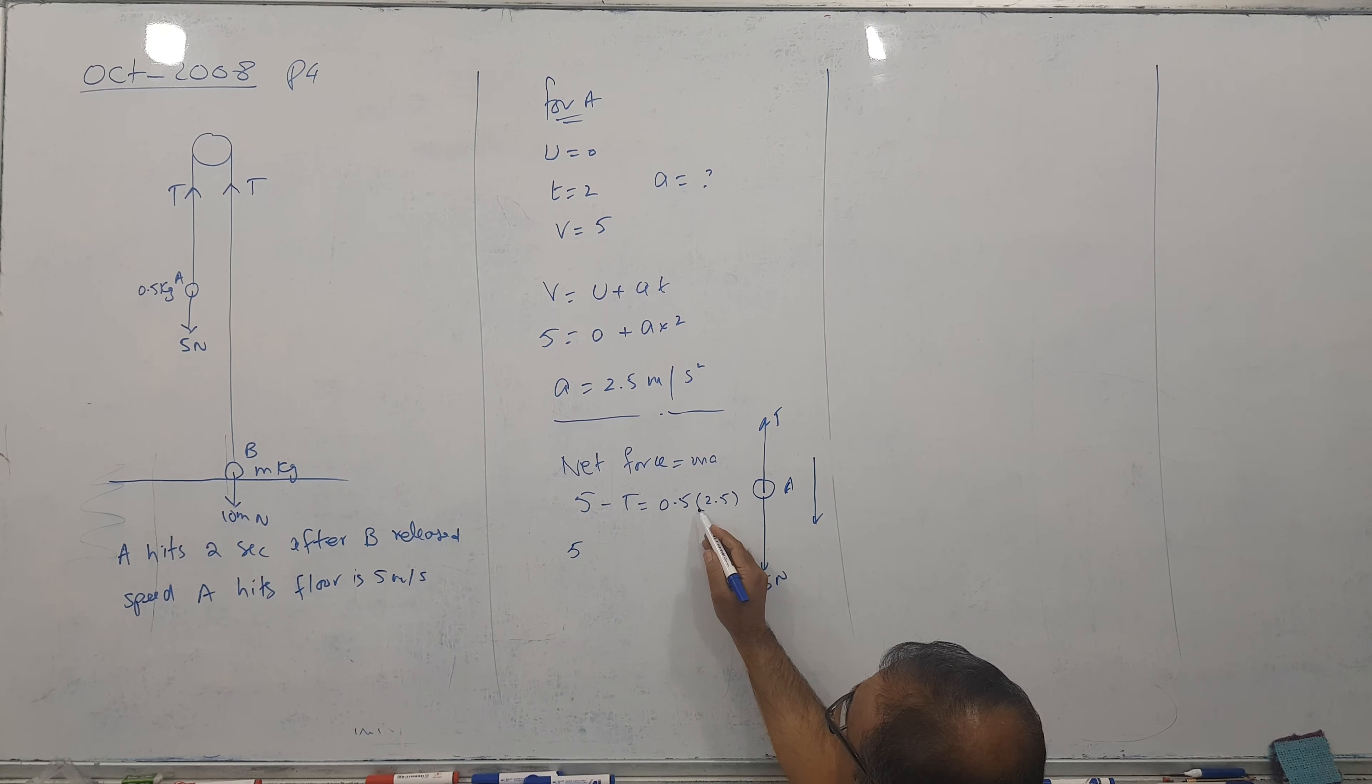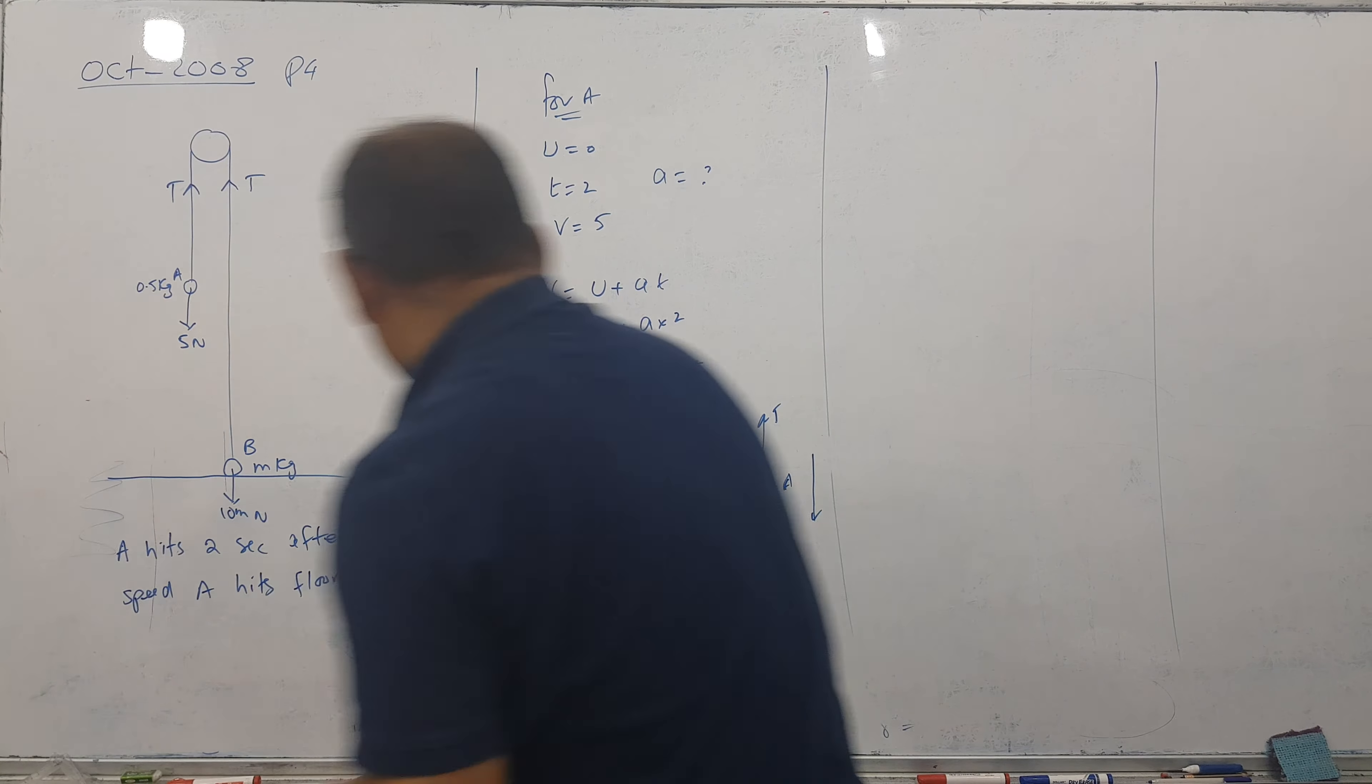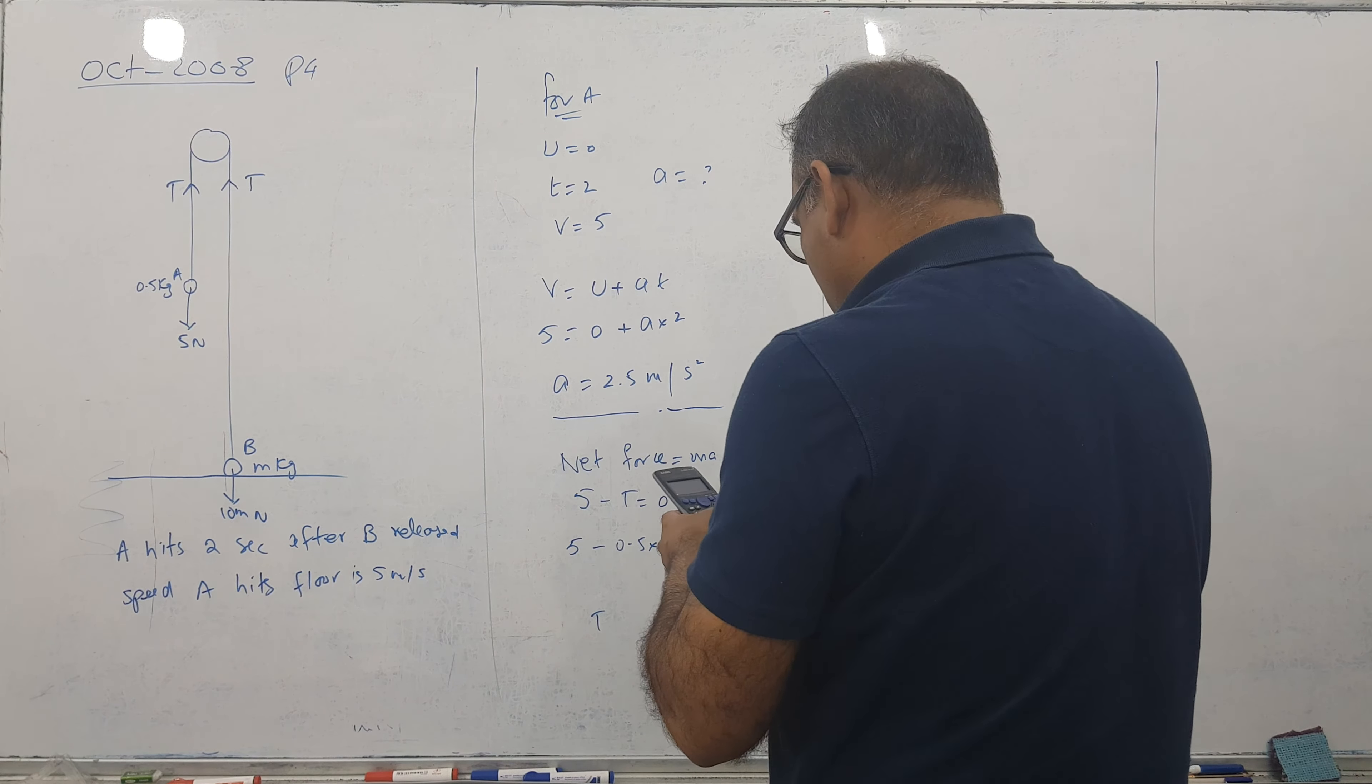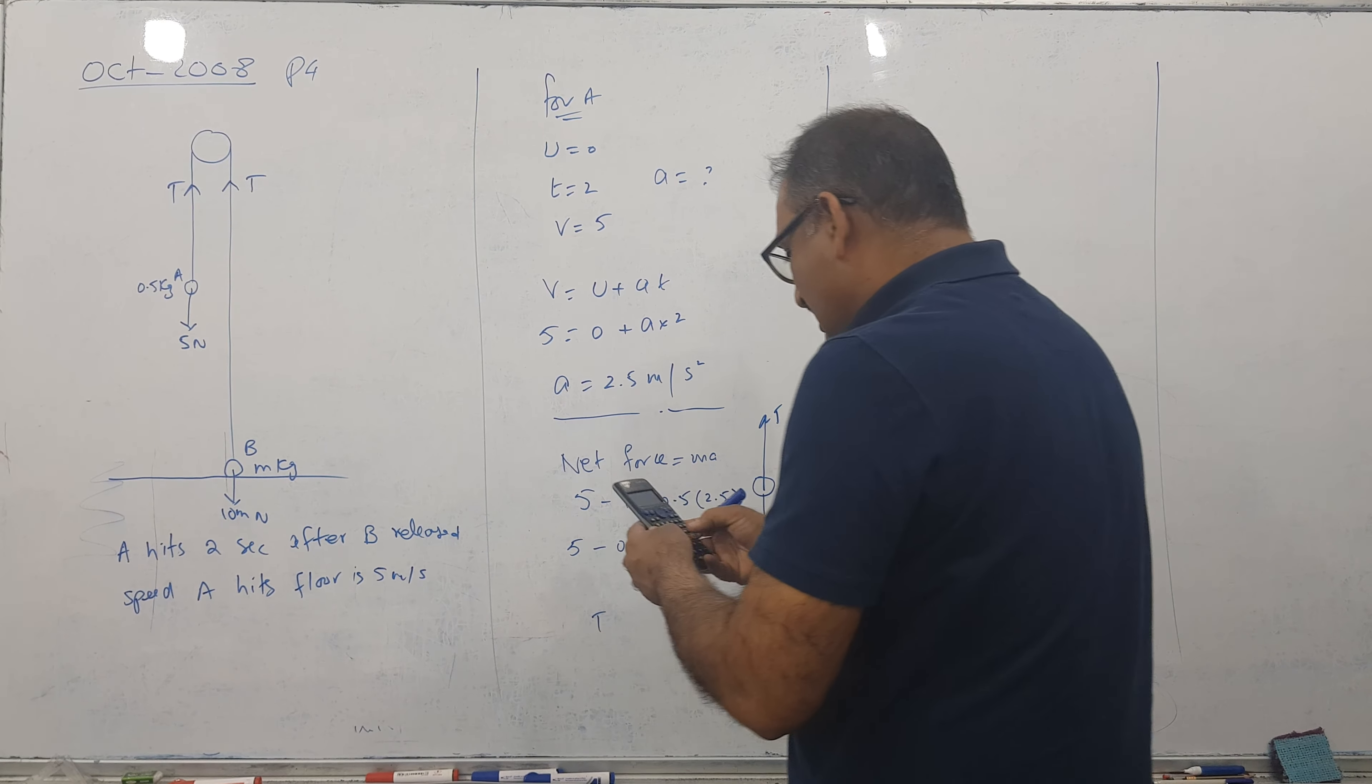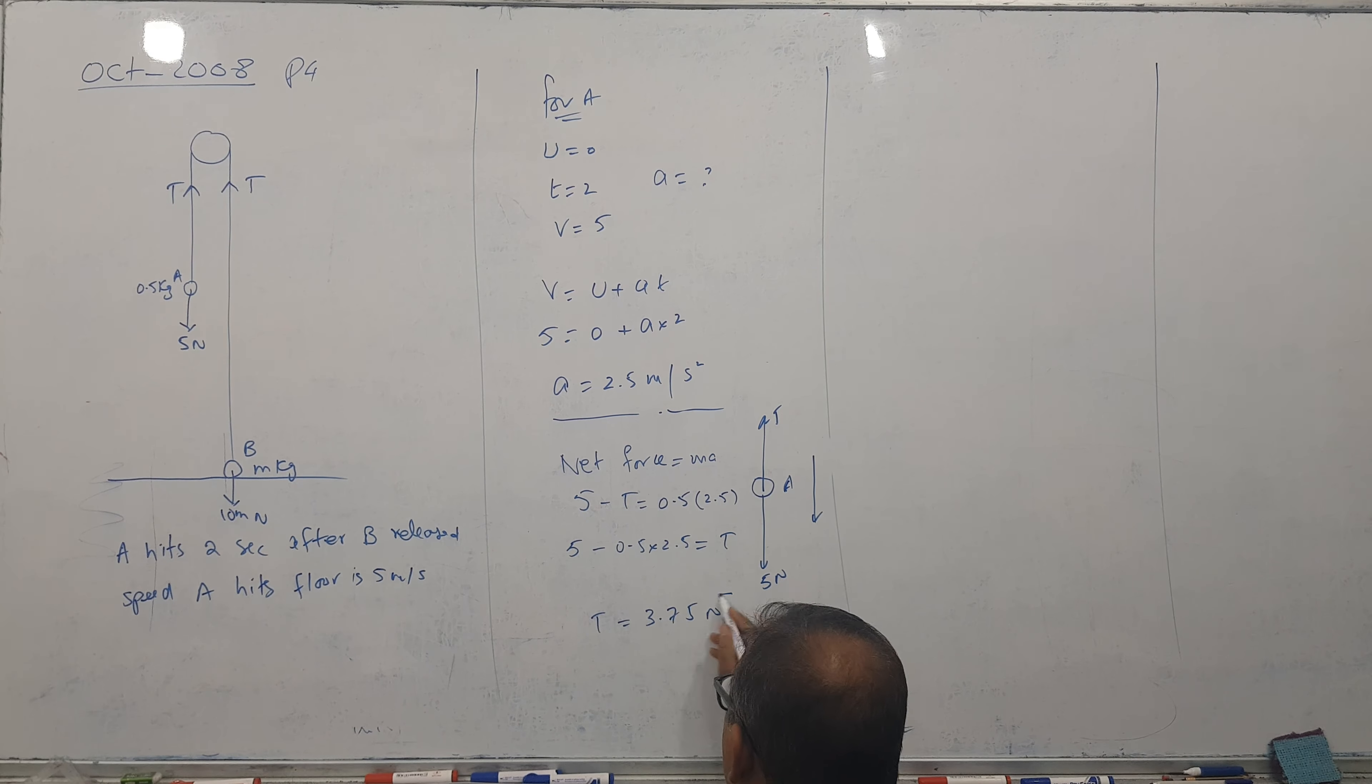This is coming 5 by 2, so this is minus 0.5 times 2.5 equal to tension. So 5 minus 0.5 into 2.5 and answer is coming 3.75 Newtons. So this is very clear.